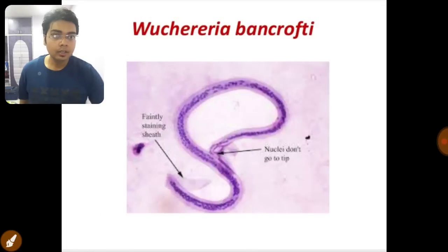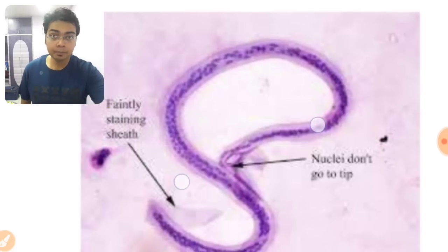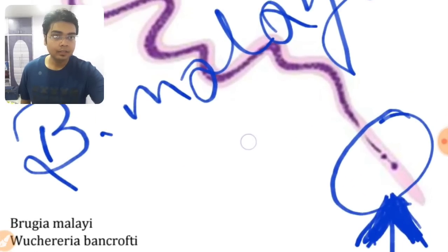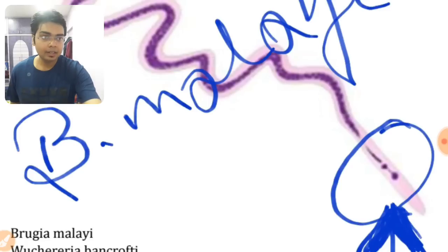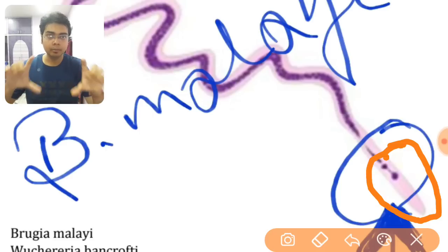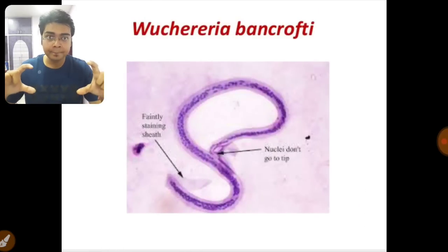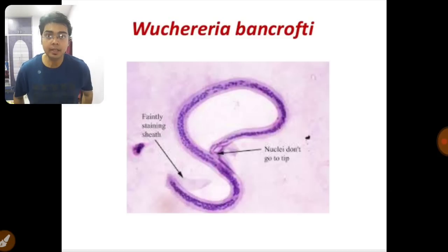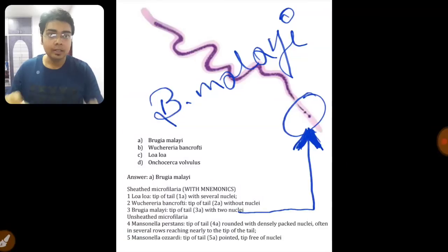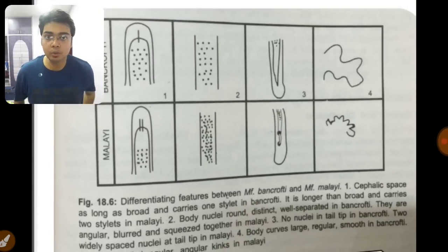Now for Wuchereria bancrofti, I'll show you the picture — you will see no nuclei at the tip. Another important differentiating point is that in Brugia malayi the cephalic end is more longer than wider, but in Wuchereria bancrofti the filarial worm is equally wider and equally longer. So: bancrofti has no nuclei and is equally wide as long, while Brugia malayi is more elongated at the cephalic end and has two distinct separated nuclei.